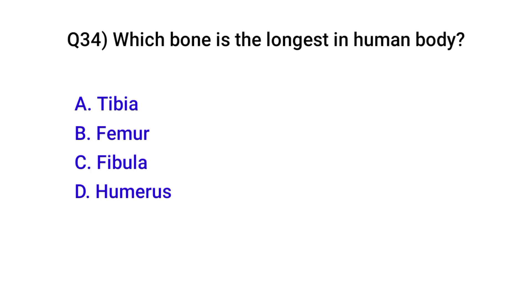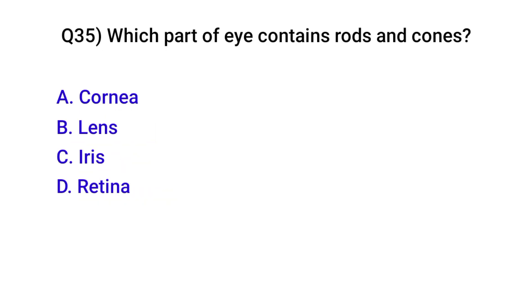Question number thirty-four: Which bone is the longest in the human body? Correct option is B: Femur. Question number thirty-five: Which part of the eye contains rods and cones? Correct option is: Retina.